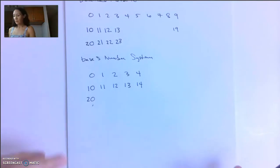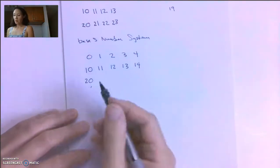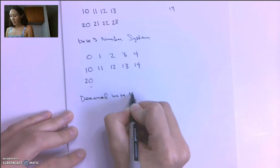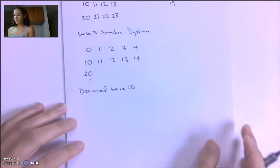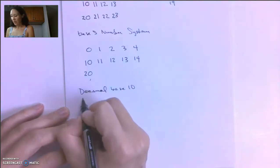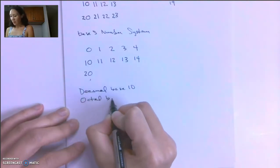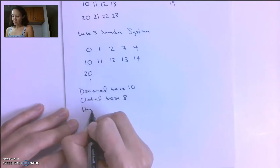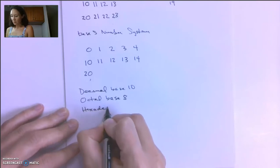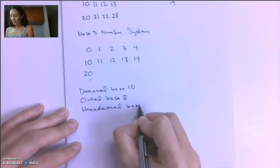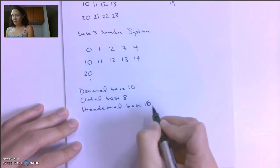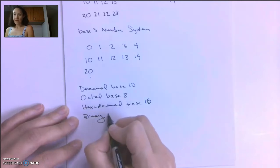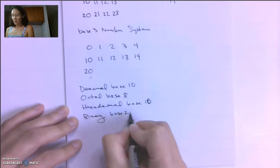The number systems that we're going to discuss in this class are obviously decimal, which is base 10. We have a good intuitive sense for that because we've been living in a base 10 world our whole lives. The other one we're going to talk about is octal, and octal is a base 8 number system. And the next one is called hexadecimal. Hexadecimal is base 16. And the last one, the most important one that we'll discuss is binary, which is base 2.